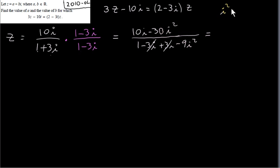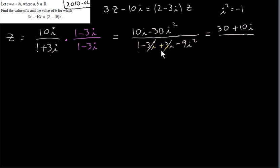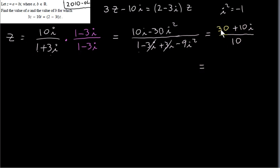Since i squared is minus 1, minus 30 times minus 1 gives plus 30. Writing real part first, we have 30 plus 10i in the numerator. In the denominator, minus 9 times minus 1 is plus 9, giving 1 plus 9 equals 10. So the fraction becomes 30 plus 10i all over 10. Splitting: 30 divided by 10 is 3, and 10i divided by 10 is i. So z equals 3 plus i.